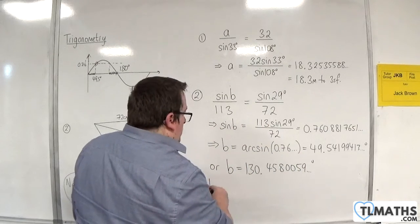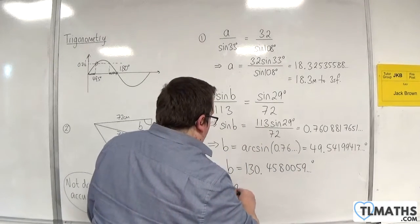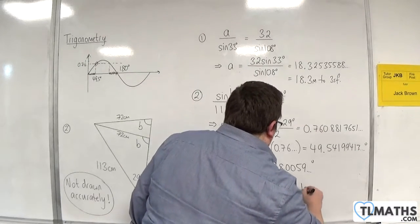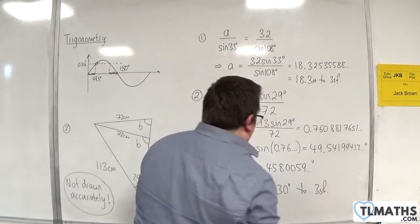we get 130.4580059 degrees. So B equals 49.5 degrees or 130 degrees to three significant figures.